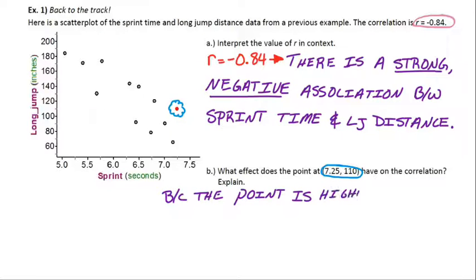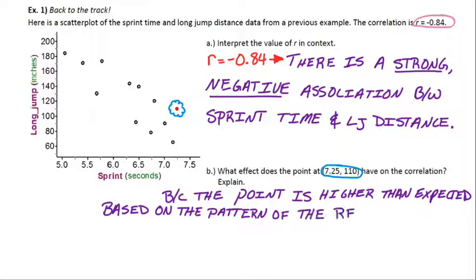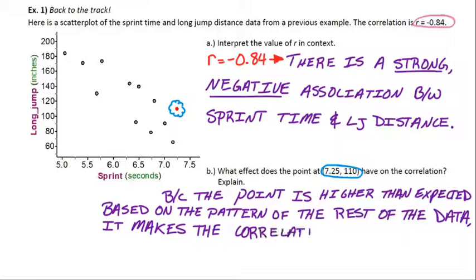So that takes away from our strength. The grouping's not as good because this one is far off. Because this point is higher than we would expect based on the pattern that we already have, this point's off the pattern a little more than any of the other points. So that actually hurts the correlation. It makes it weaker. If this was a perfect line, the correlation would be negative one. But we're only at negative 0.84 because of points like this. So that means instead of being negative one, it makes the correlation closer to zero.